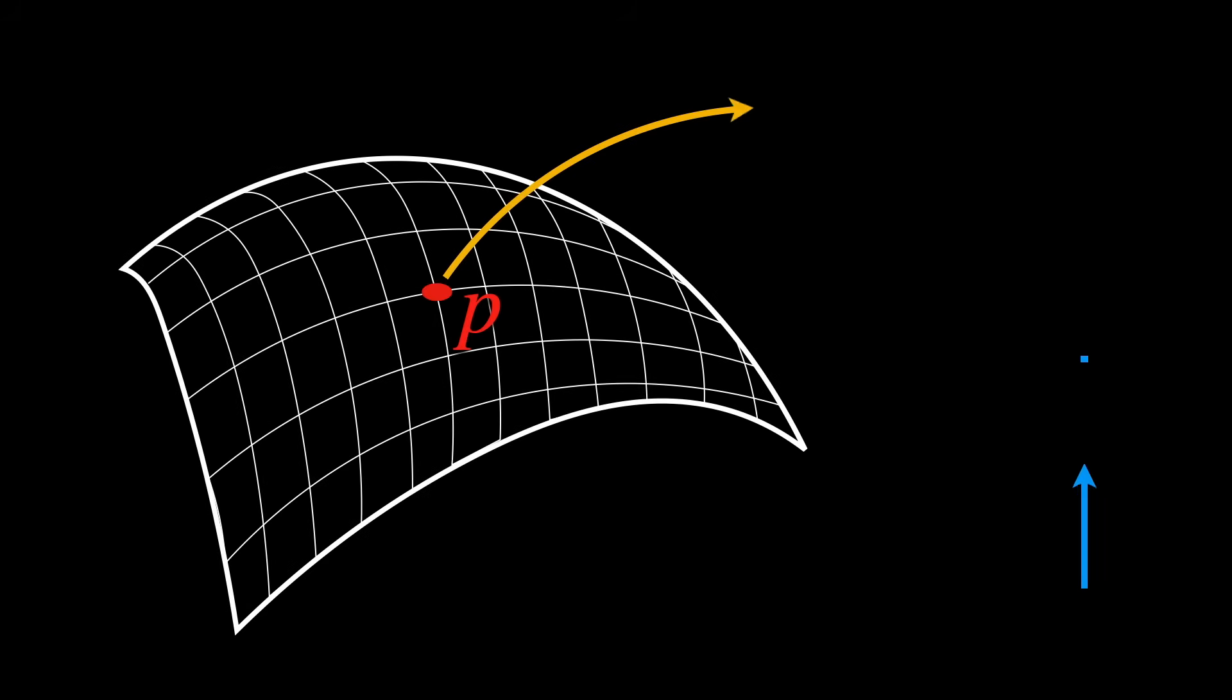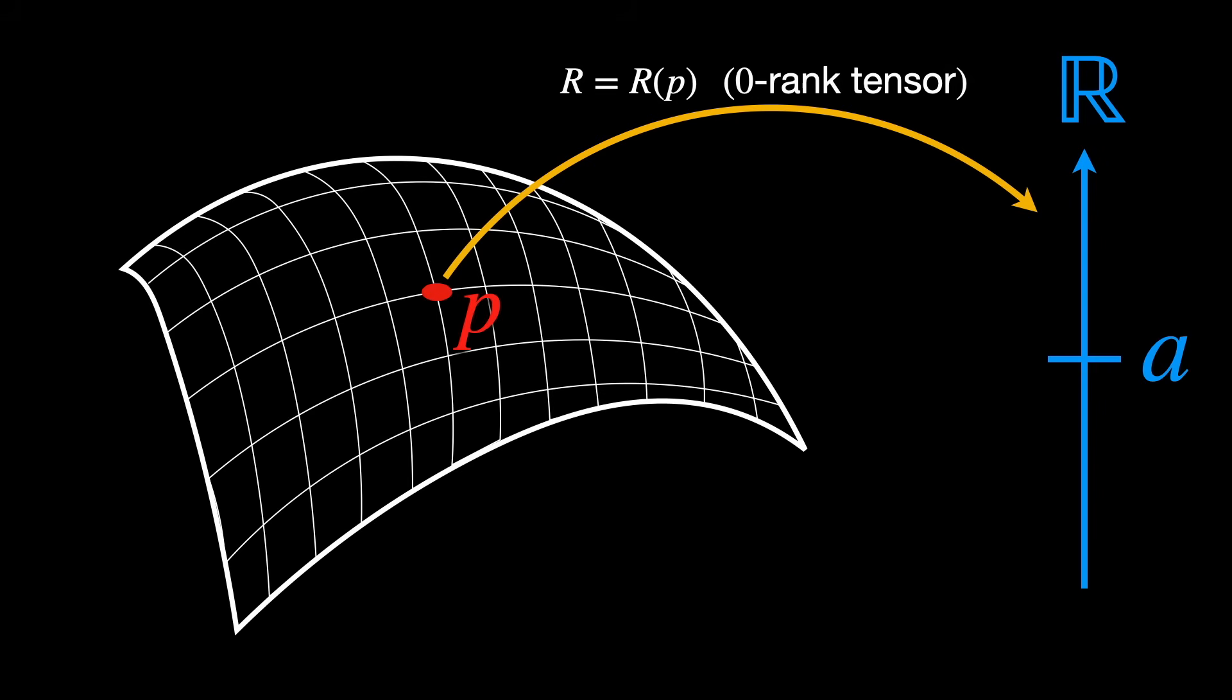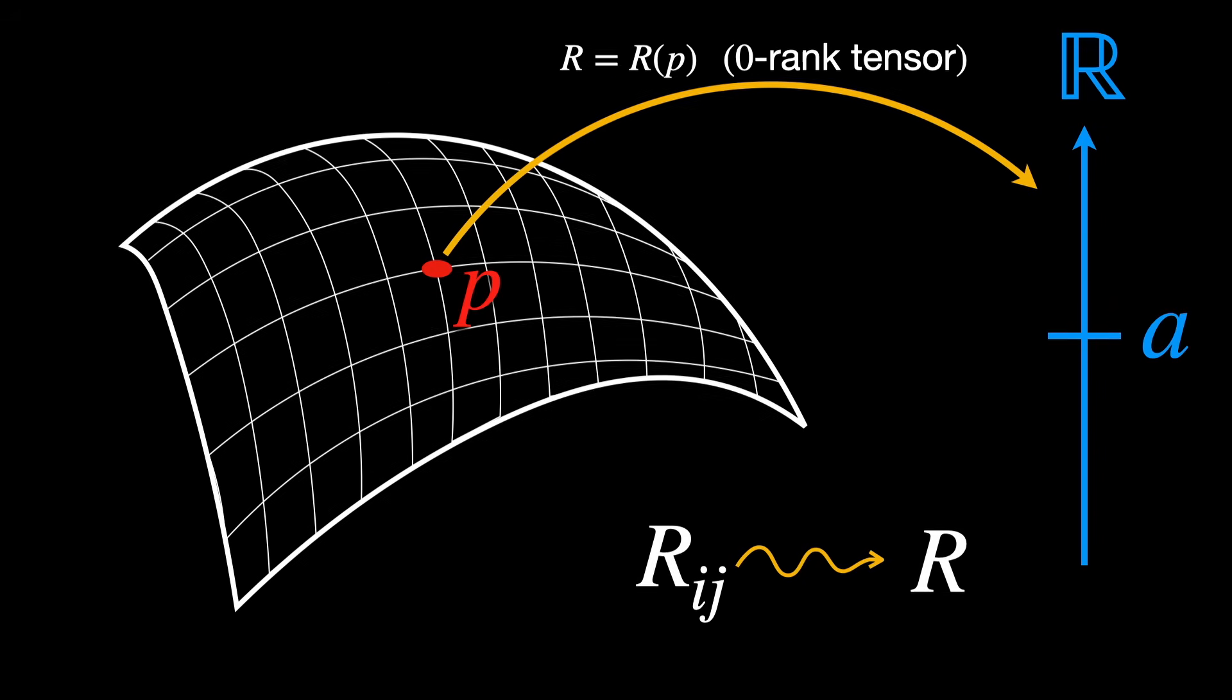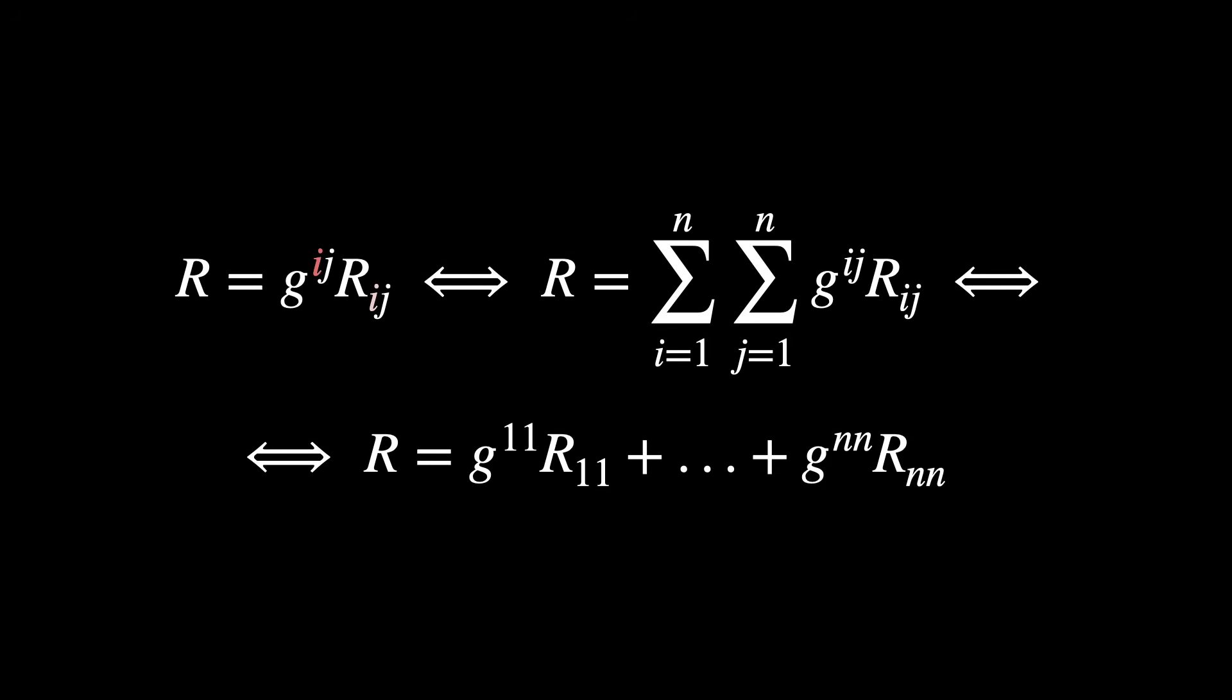R is a real valued function, so a zero rank tensor which is obtained by collapsing the Ricci tensor into a single number. This is done by summing over both indices of the Ricci matrix using the inverse metric, so a double contraction.